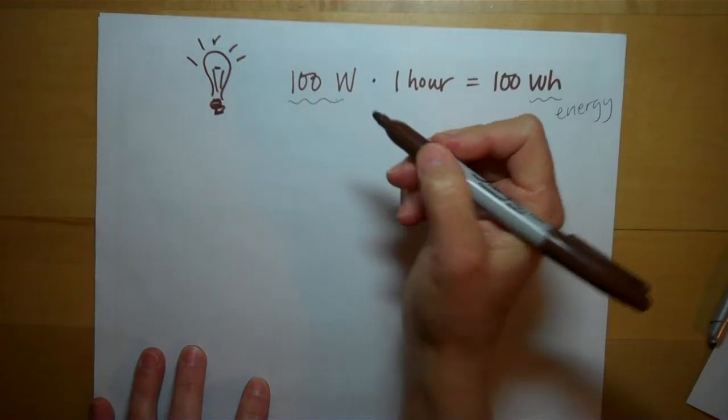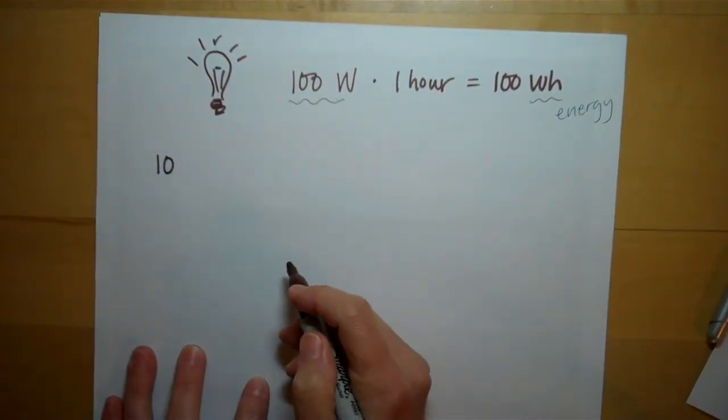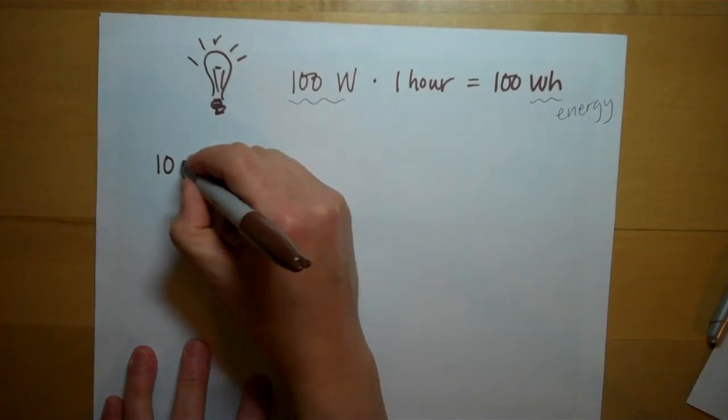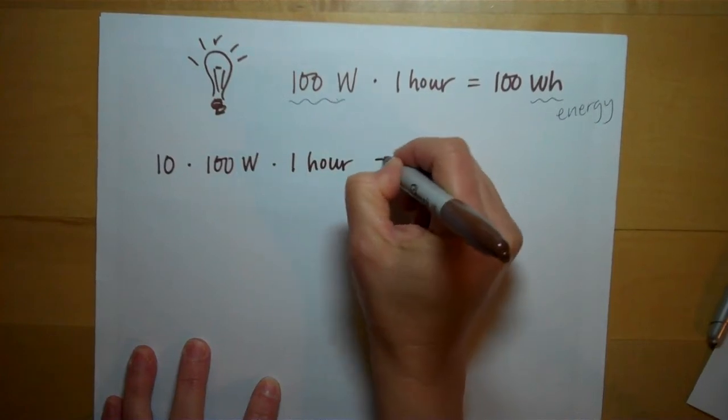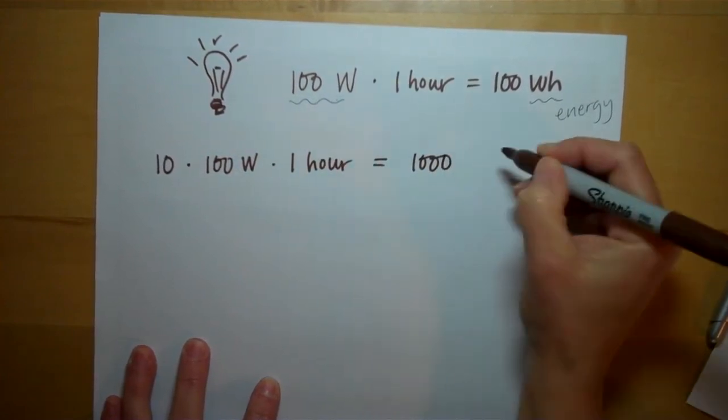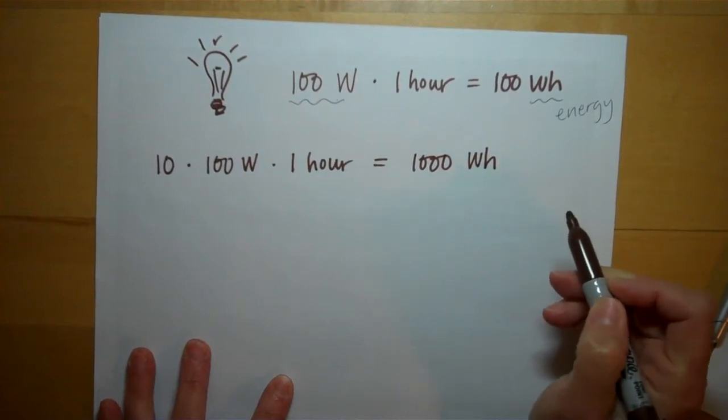Say it's the evening, everybody's home from school and work, and say you have 10 of these light bulbs burning all throughout the house. So they're 100 watt light bulbs. They're all running for an hour. Now, after one hour, you've used 1,000 watt-hours of energy.